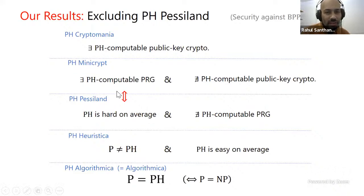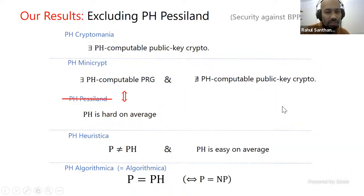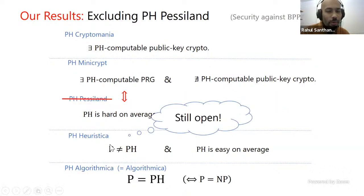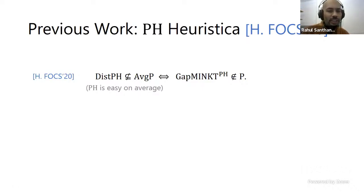We basically show that pH being hard on average is equivalent to the existence of pH-computable PRGs, in the non-uniform setting and in the uniform setting with small stretch. So the world where you have hardness on average and PRGs don't exist is just false. The question of whether pH-Heuristica exists is still open and is an interesting open question.